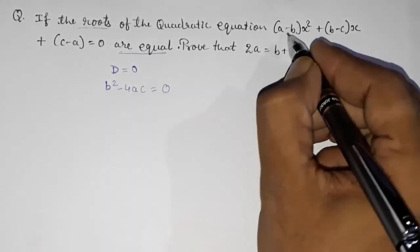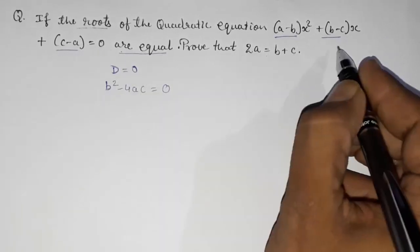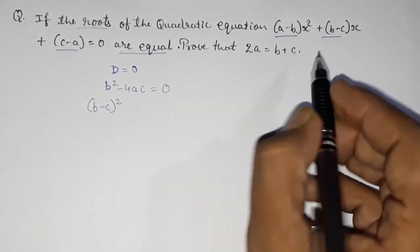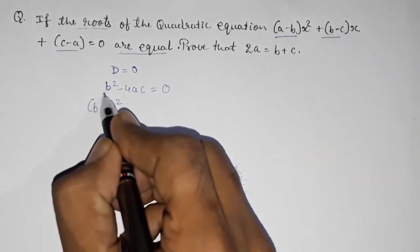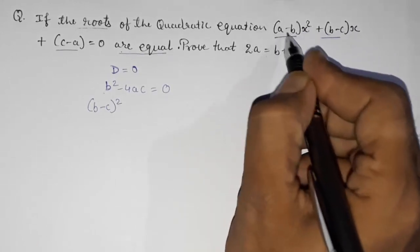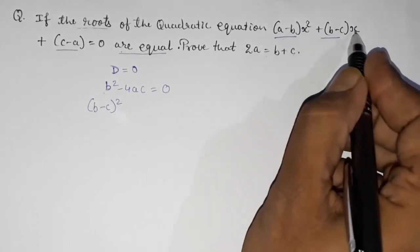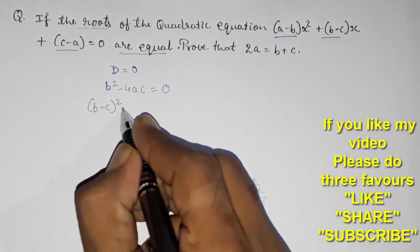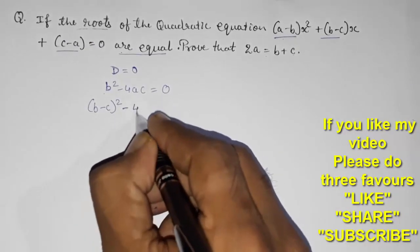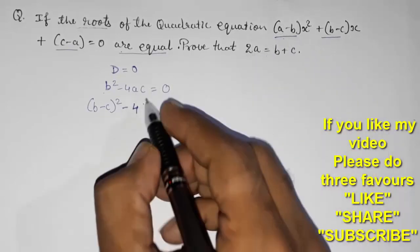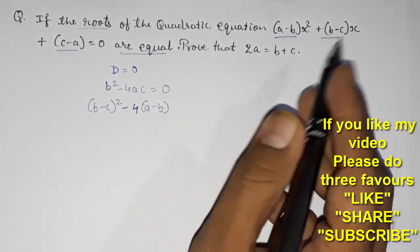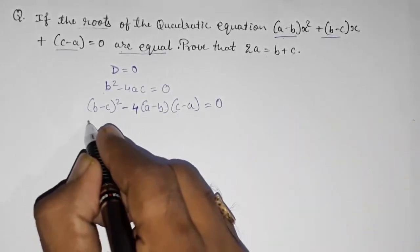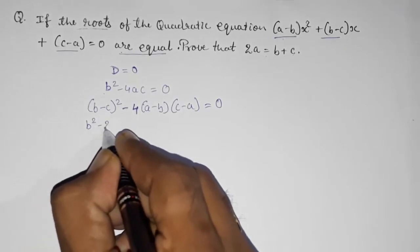So we know discriminant means b squared minus 4ac equals 0. Now find out a, b, and c from this equation. Here b will be (b minus c) whole square — don't get confused between this b and the coefficient b. The coefficient of x squared is called a, the coefficient of x is called b, and the remaining number is c. So b will be (b minus c) whole square, then 4 times a which is (a minus b), and c which is (c minus a), equals 0.